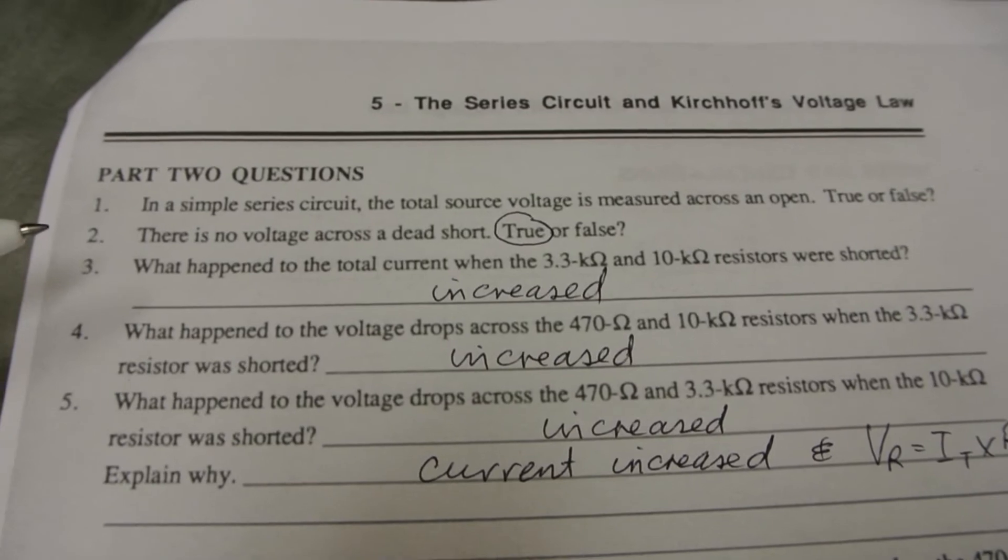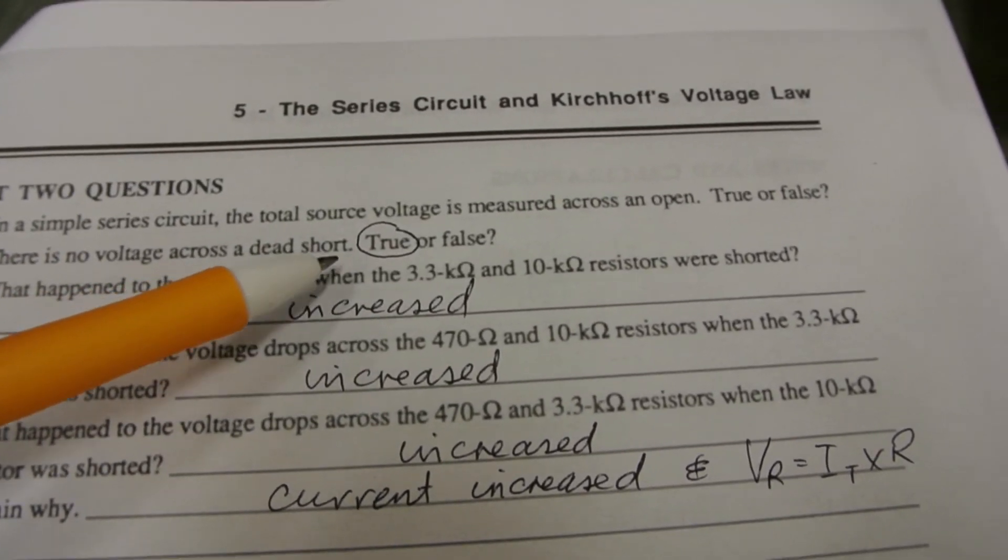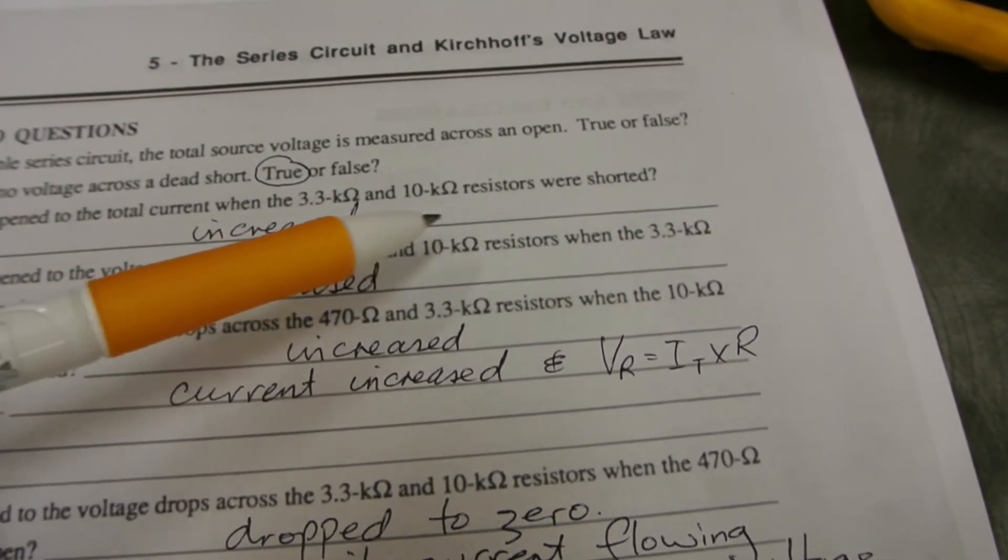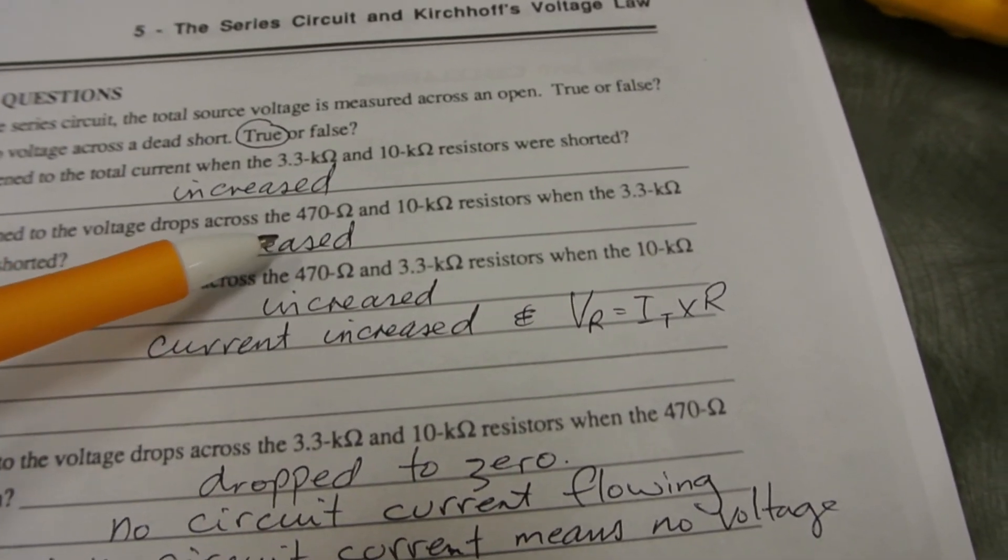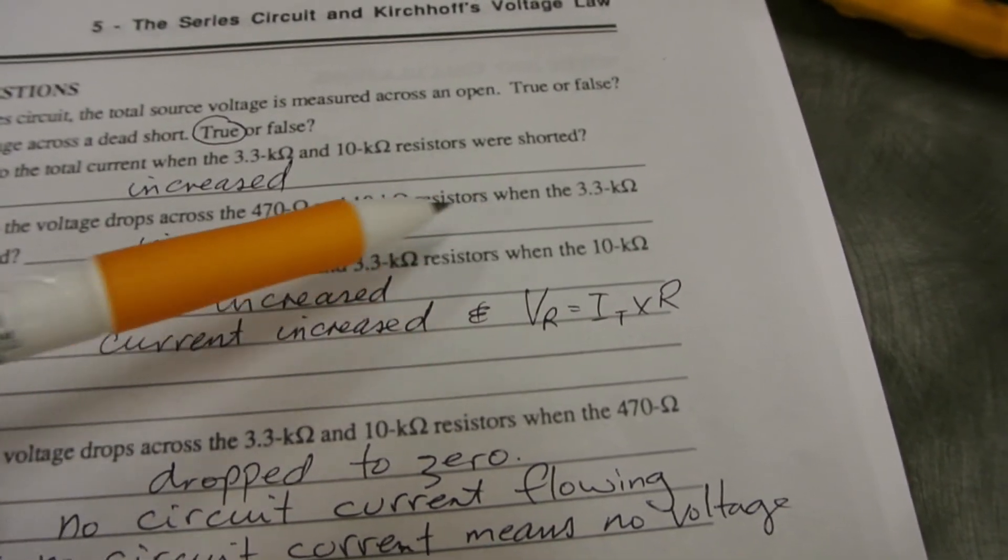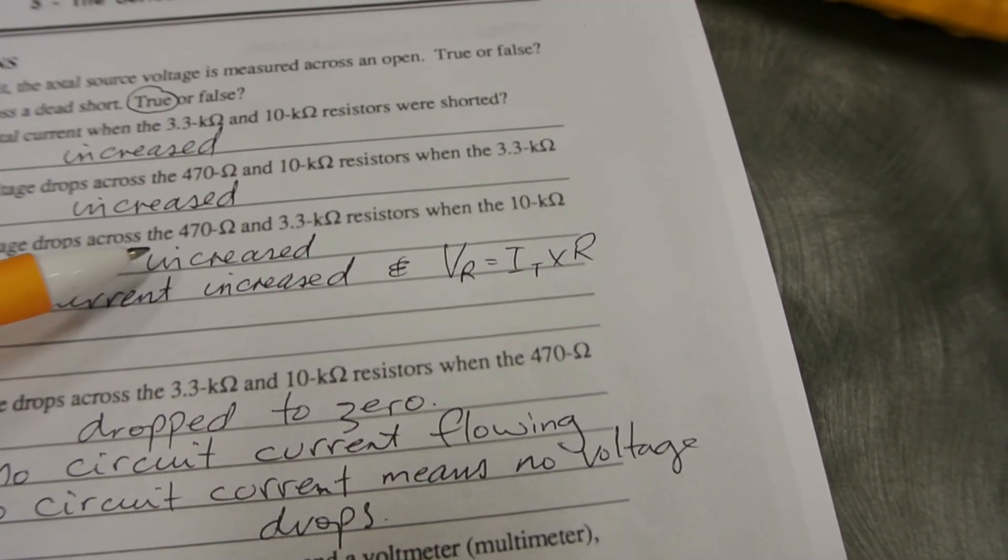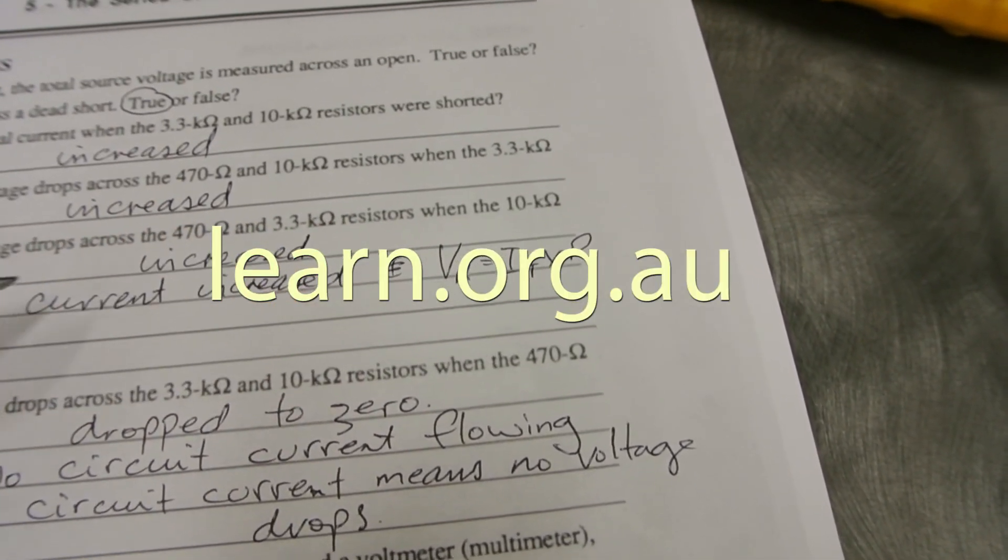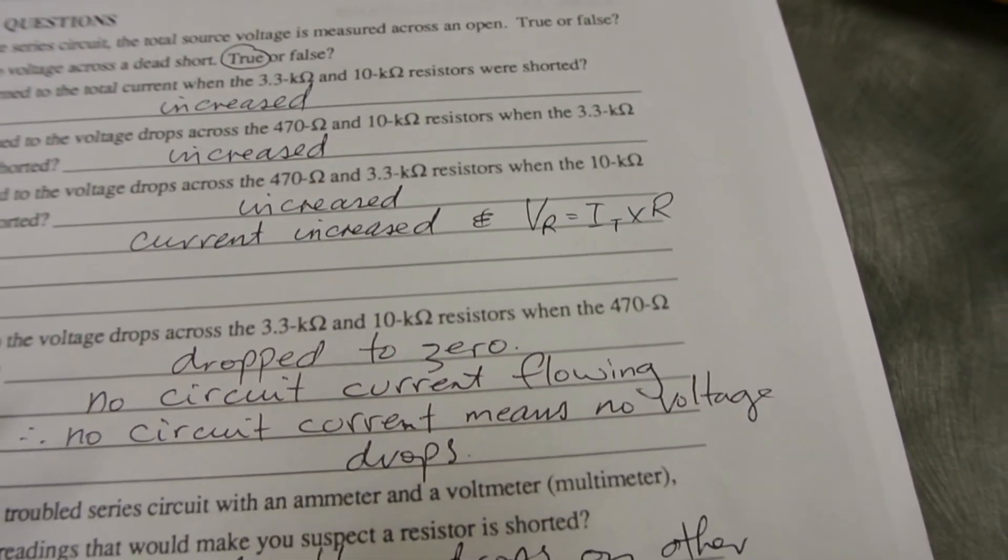Then there were questions, part two questions. There's no voltage across a dead short, that's perfectly true. What happened to the total current when the resistors were short-circuited? It increased. What happened to the voltage across the 470 ohm and 10k resistor when the 3.3k was shorted? It increased. What happened to the voltage drops across the 470 ohm and 3.3k when the 10k was shorted? It increased. We can look at the chart to see the value it increased by.